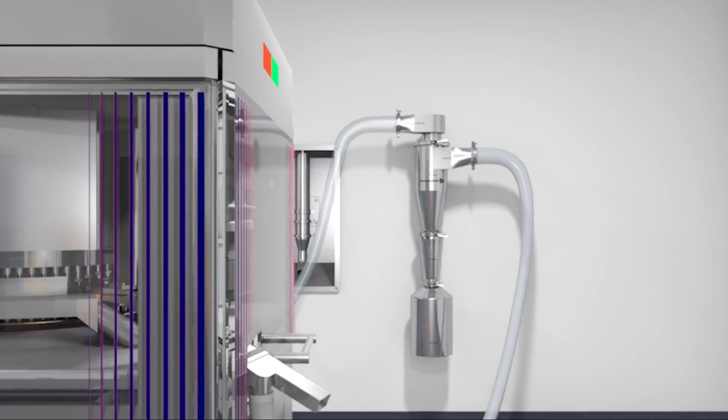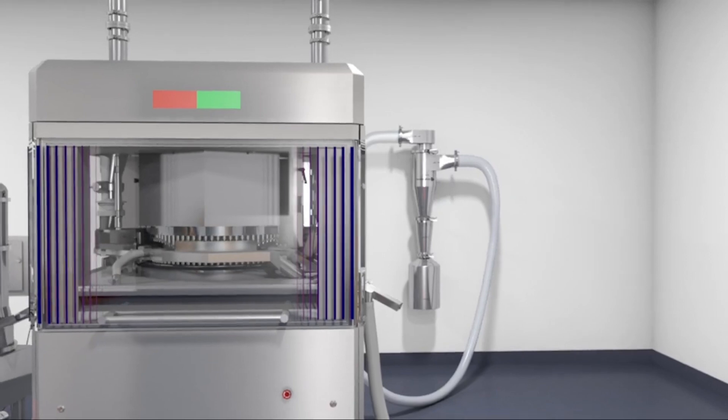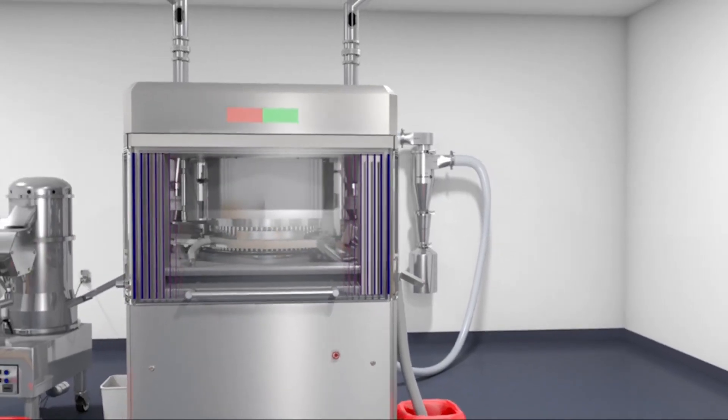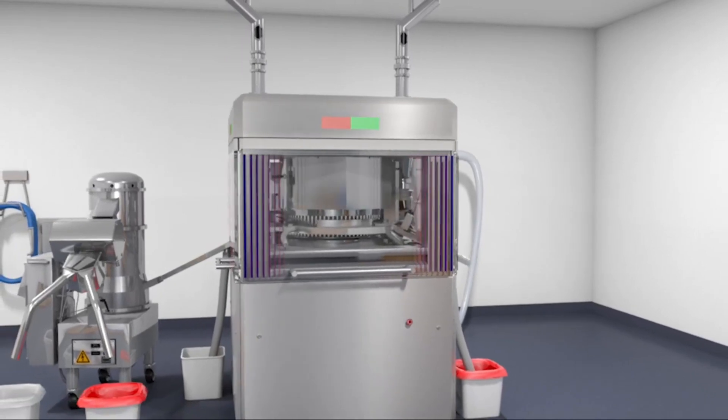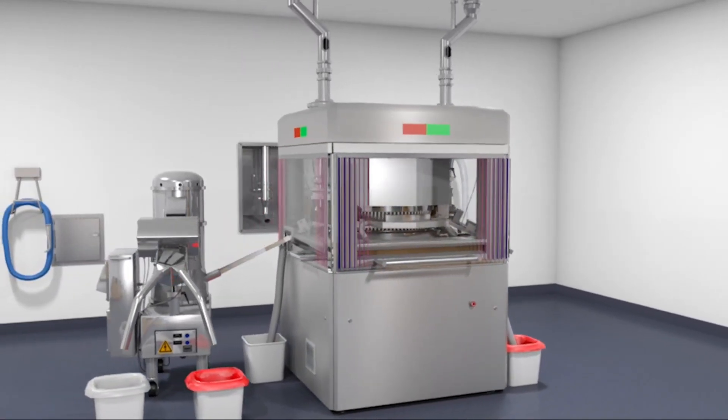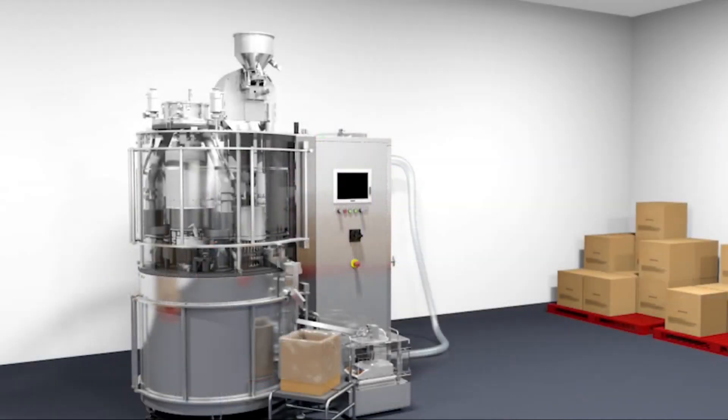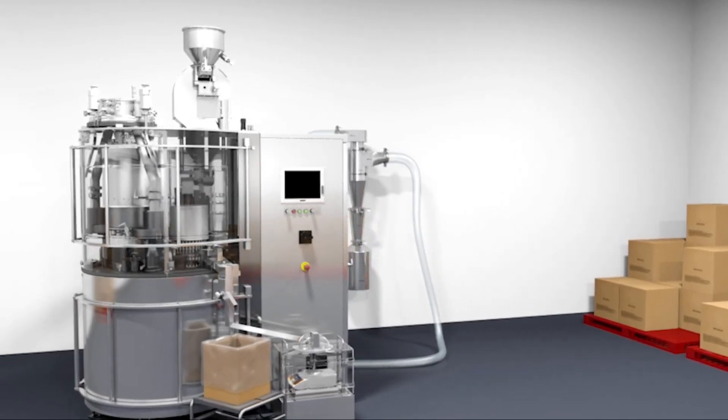The Hanningfield Unidust Cyclone has been successfully installed onto various industry-standard compression machines, such as Fette, Manesty, Korsch, Kilian, and Stokes, and capsule filling machines such as MG2, Bosch, Kilian, Zanasi, IMA, and many more.